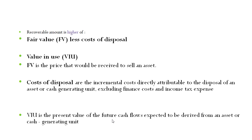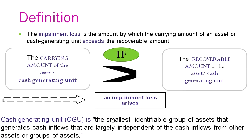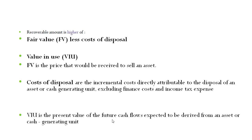A cash generating unit (CGU) is the smallest identifiable group of assets that generate cash inflows and are largely independent of the cash inflows from other assets or groups of assets. It has the capability to generate cash inflows separately and can be independently identified and separated from other assets. The recoverable amount is the higher of fair value less cost of disposal or value in use.